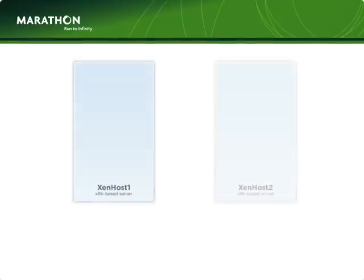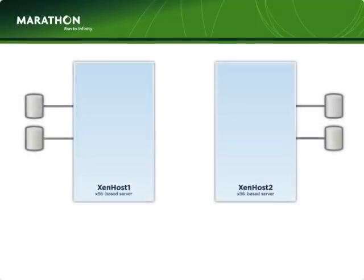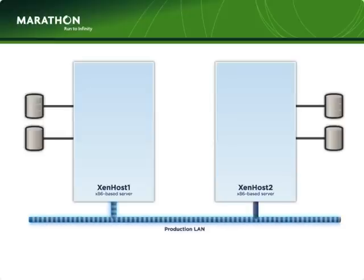EverRun VM starts with a minimum of two physical servers. Each server can have its own storage, which can be based on SAN, NAS, or even direct-attached, as shown here. You also have the option to use a shared storage model as well. Each server has its own network connection and a communication link between the servers that we call the availability link.